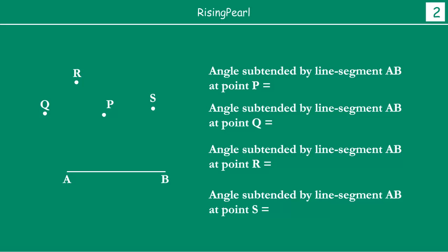So, yehap Dostho, just for fun, what we have done is we have got our same line segment AB, but yehap Dostho, we have a point P, and in addition to point P, we have drawn three other points — P, Q, R, S. So, amare paas total char points hai. All these points, Dostho, they don't lie on our line segment AB. They are away from our line segment.